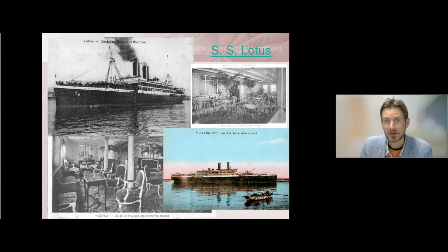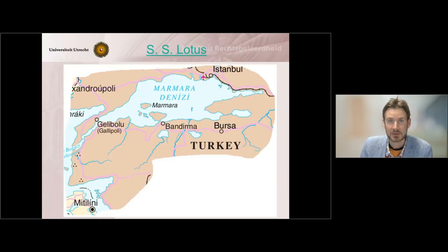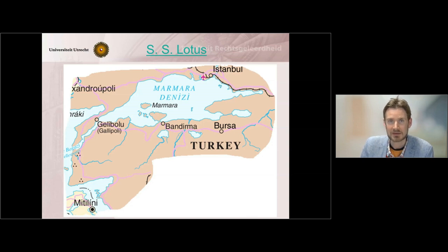The Lotus case is a very old case involving France and Turkey, about the collision of a French steamer with a Turkish vessel, the Boz-Kourt, on the high seas. The two ships collided and Turkey arrested the French officer of the watch and took him before its criminal justice system — Turkey prosecuted a French national for crimes committed on the high seas. France alleged that Turkey was not allowed to do this, that there was a prohibition on prosecuting foreign nationals for crimes committed on the high seas.